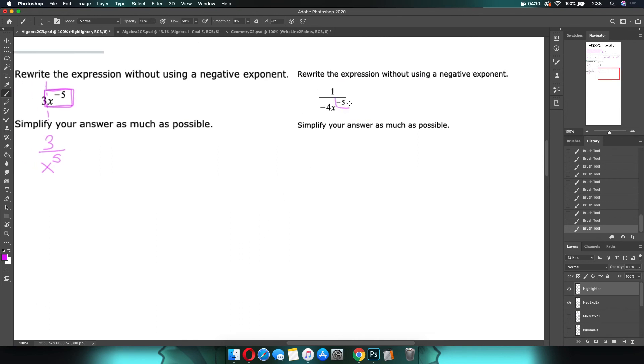Now over here again, we have that negative 5. It only is attached to my x, which means that's the only thing that is moved. So x to the 5th comes up top because we flip our fraction, and the negative 4 stays where it is. So this is all about flipping fractions. That's what you're trying to get used to. How much of a fraction are you flipping? How many ways are you flipping? That kind of thing.